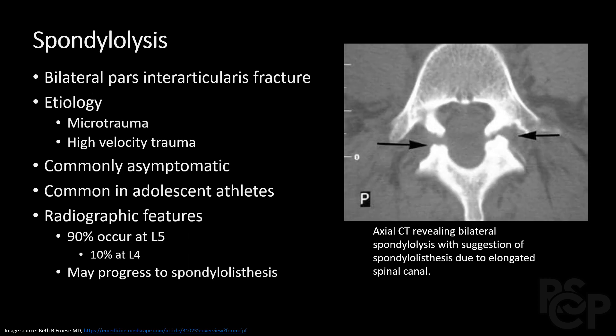Spondylolysis is a bilateral pars interarticularis fracture. The pars interarticularis is the space between the superior and inferior articulating processes. Patients with spondylolysis often perform repetitive activities such as gymnastics, resulting in microtraumas that accumulate over time, or they may have been in high-velocity trauma. The vast majority occur at the level of L5, and these patients run the risk of spondylolisthesis due to disruption in bony anatomy. On imaging, you can see the two areas of defect indicating the bilateral pars interarticularis fracture, and an elongated, oblong shape of the spinal canal can suggest spondylolisthesis on axial slices.